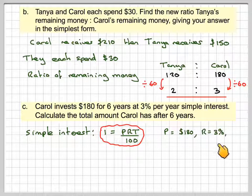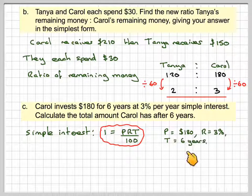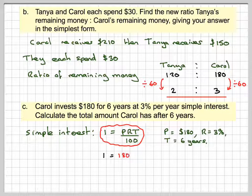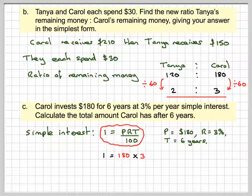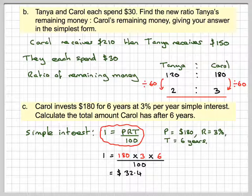P is 180, R is 3%, and T is 6 years. So I is going to be 180, the original amount, times the rate, which is 3, times the time, which is 6, divided by 100. And if we work that on our calculator, we're going to get 32.40. But this is only the interest.